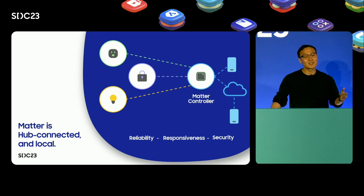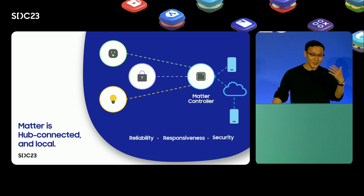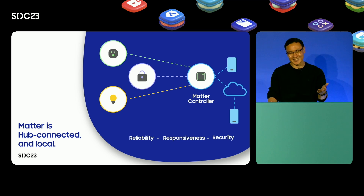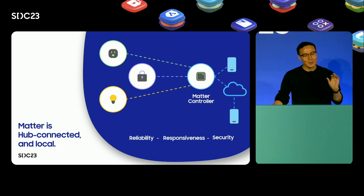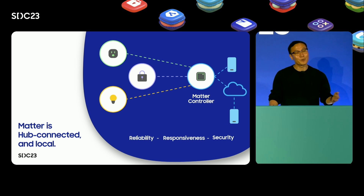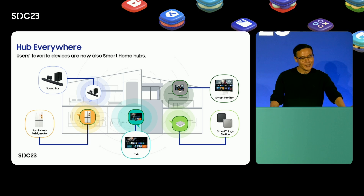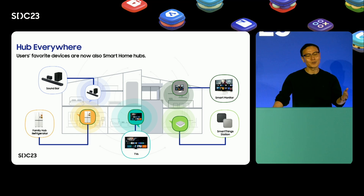A Matter device connects within the home directly to a device that Matter defines as a Matter controller. A Matter controller is not a standalone physical device but simply a function that can be built into many kinds of devices like speakers, TVs, and even apps. Many of these products already got this functionality when Matter launched, which very quickly created a large new market for Matter devices. Almost every smart home now supports Matter.